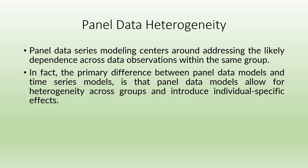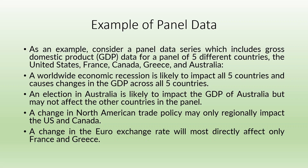Regarding panel data heterogeneity: panel data modeling centers around addressing the likely dependence across observations within the same group. The primary difference between panel data models and time series models is that panel data allows for heterogeneity across groups and introduces individual-specific effects. For example, consider a panel including GDP data for five countries: the United States, France, Canada, Greece, and Australia. A worldwide recession impacts all five countries, accounting for common heterogeneity. However, an election in Australia impacts only Australia's GDP, a change in North American trade policy affects only the US and Canada, and a change in Euro exchange rates mostly affects France and Greece.